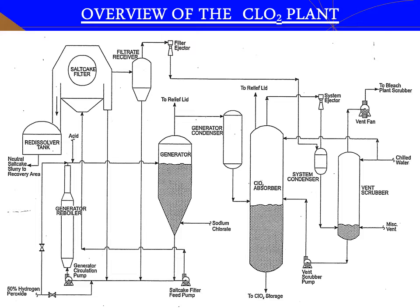In the absorber, chilled water enters the top of the absorber and flows down. As the gases rise, the water absorbs the chlorine dioxide, creating a chlorine dioxide solution. Vent gases from the process are drawn into the scrubber by a fan and are treated before discharge through a stack.